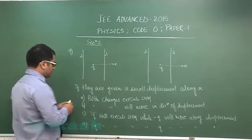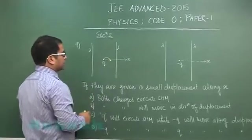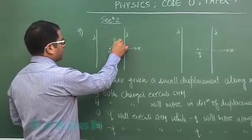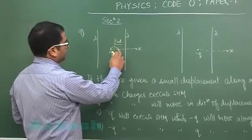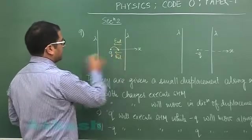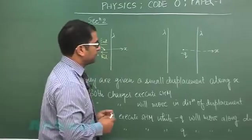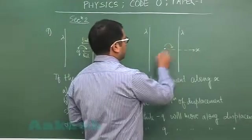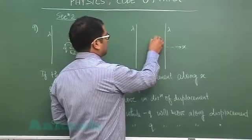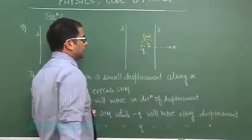If you see, if I displace q then it would be in the resultant field of this direction, and a positive charge when a resultant field is in this direction will experience a net force in this direction indicating the equilibrium of q is stable. While the equilibrium of minus q would be unstable because if I bring minus q here it would come in the resultant field of this direction and that would move against the external field.